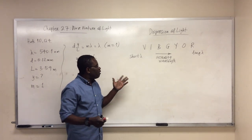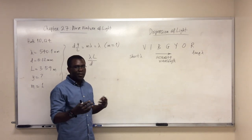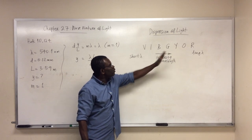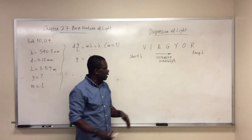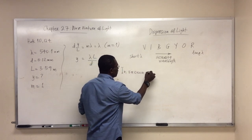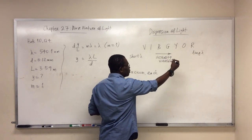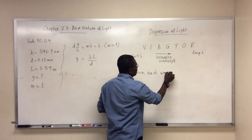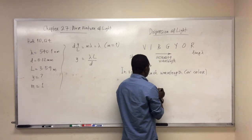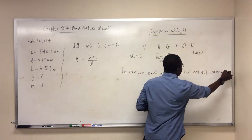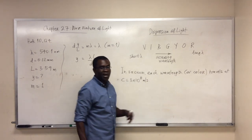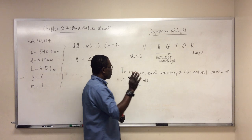Light travels at 3 × 10⁸ meters per second in vacuum. In vacuum, all component wavelengths of light travel at the same speed — each wavelength travels at c, 3 × 10⁸ m/s (more precisely, 2.99792458 × 10⁸ m/s). But this is not true when light travels in a transparent medium that is not vacuum.